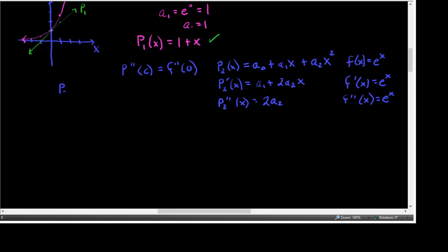We want P sub 2 of 0 to equal F of 0. So that's going to be A sub 0 plus A sub 1 times 0 plus A sub 2 times 0 squared, and we want that to equal E to the 0, which means A sub 0 is 1.